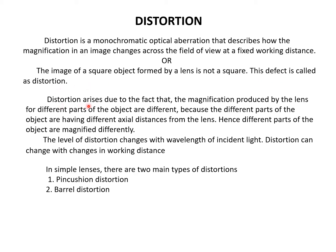Distortion arises due to the fact that the magnification produced by the lens for different parts of the object are different. This is mainly based on magnification. Magnification produced by the lens for different parts of the object are different because the different parts of the object are having different axial distances from the lens. Hence, the different parts of the object are magnified differently.